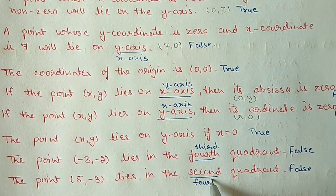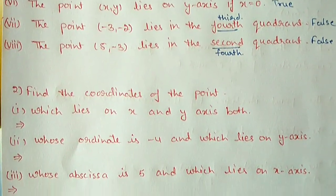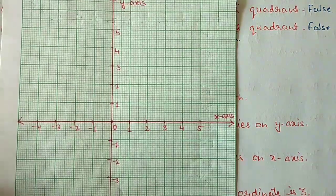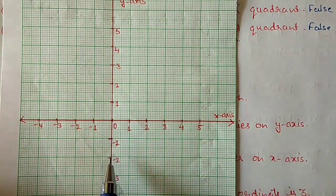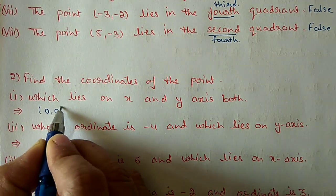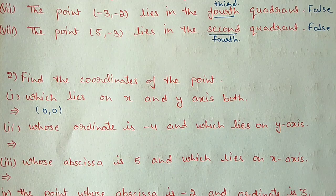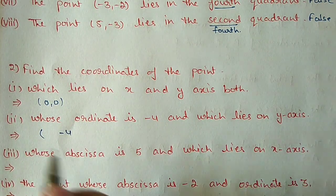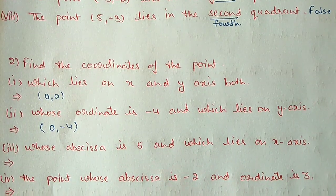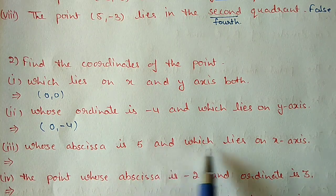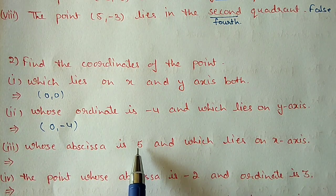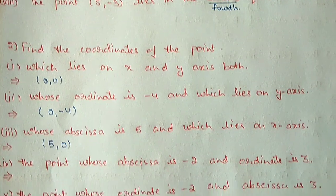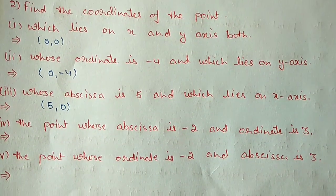Question number 2: find the coordinates of specific points. First, the point that lies on both x and y axes — that is the origin, with coordinates (0, 0). Second, the point whose coordinate is -4 and lies on the y-axis: y-value is -4 and x is 0, so the point is (0, -4). Third, the point whose abscissa is 5 and lies on the x-axis: x is 5 and y is 0, giving (5, 0).